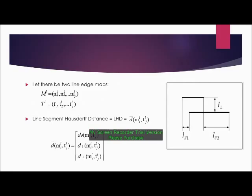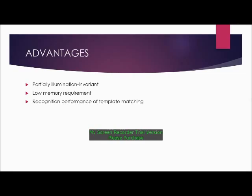There may be two line edge maps, ML and TL. This is the formula given for the calculation of Line Segment Hausdorff Distance. The LHD is calculated in three directions and has three components. The advantages of edge line mapping are that it is partially illuminant invariant, and since it only needs the starting and end points of line segments, the memory requirements are low. The recognition performance is equivalent to that of template matching.